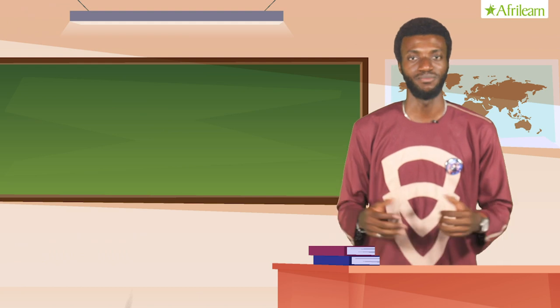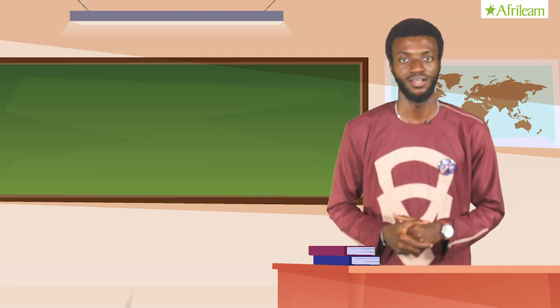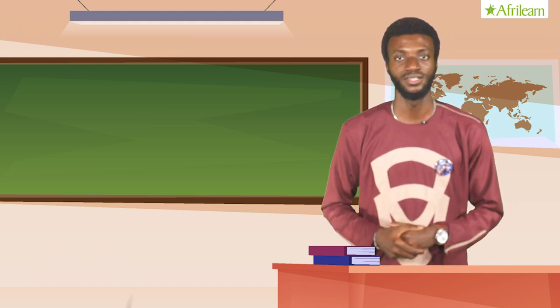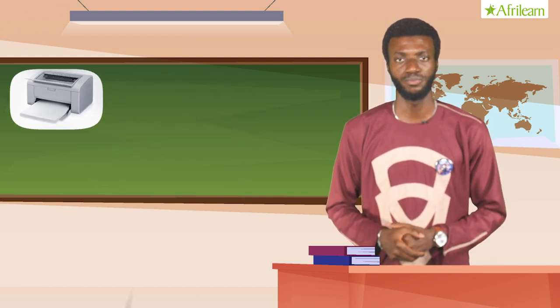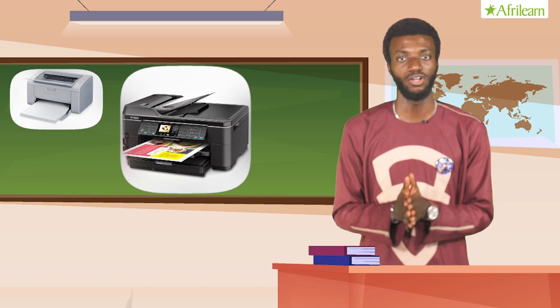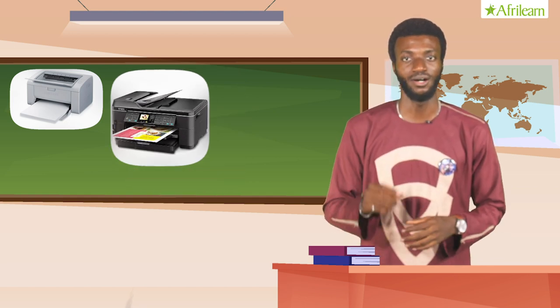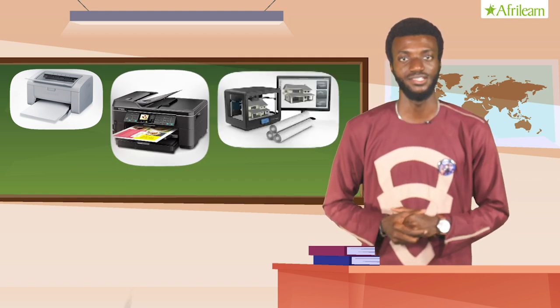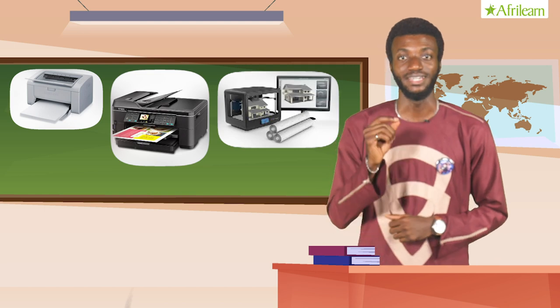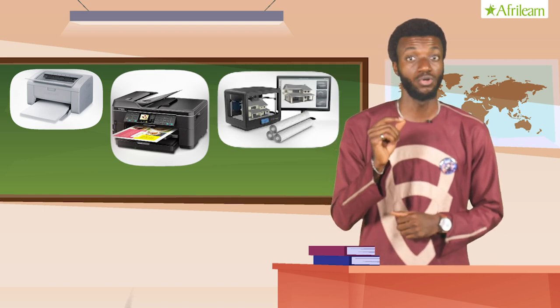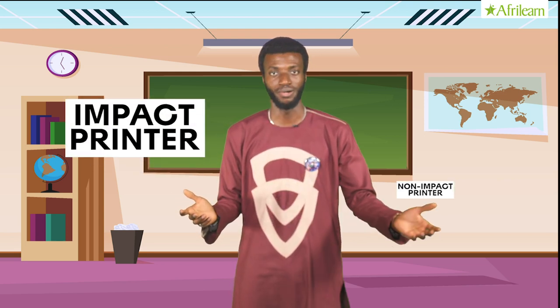We have different types of printers. Some print black and white, others print the exact colors on your documents, while some print out 3D images in such a way that the images will look so real to you. In computer science, we have two major types of printers. These are impact and non-impact printers.